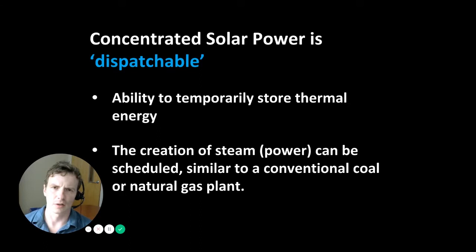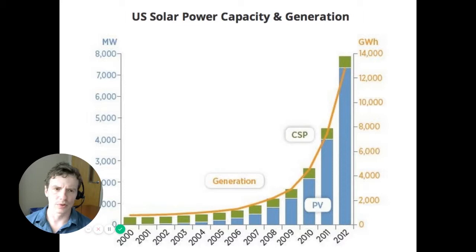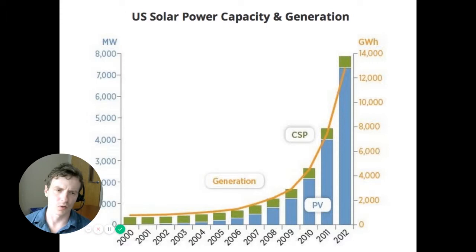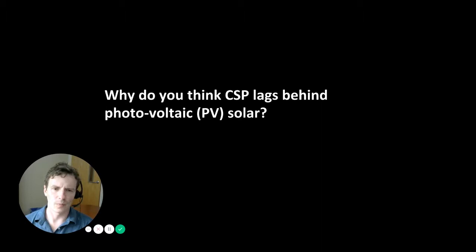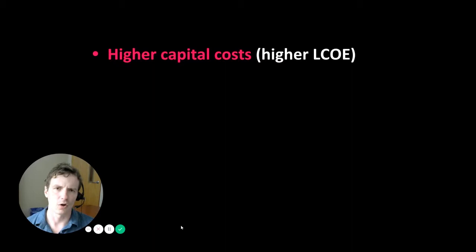Concentrated solar power can actually be scheduled, similar to how we schedule generation at a conventional coal or natural gas plant. Even though the world's installed capacity of CSP is increasing, compared to total installation of PV or photovoltaics, concentrated solar power is today a very small segment of the solar market. It's worth asking why, especially since CSP is dispatchable and controllable — which addresses many challenges with intermittent renewables. The simple answer is that CSP costs significantly more and has higher capital costs.